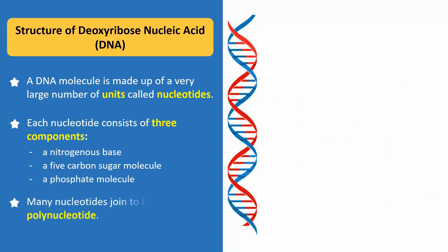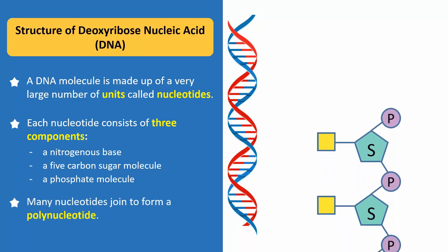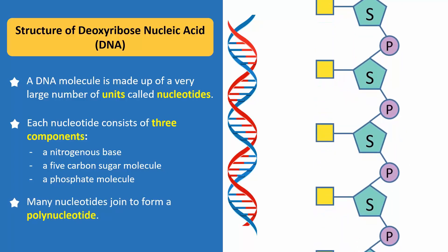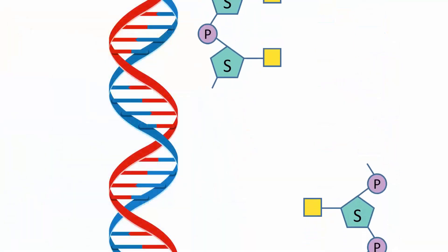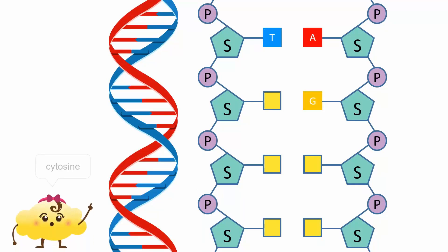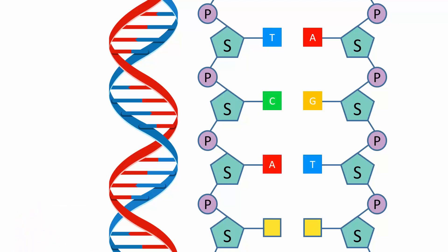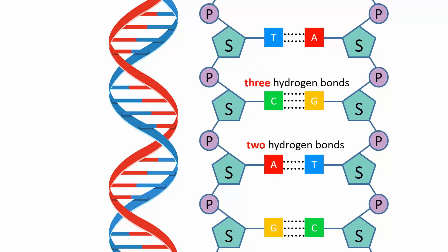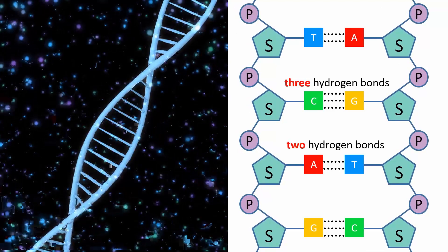Many nucleotides join to form a polynucleotide. The nitrogenous bases always exist in pairs: adenine is attached with thymine, while guanine always pairs up with cytosine. There are two hydrogen bonds between adenine and thymine, and three hydrogen bonds between cytosine and guanine. Think of these bonds as the glue holding them together.